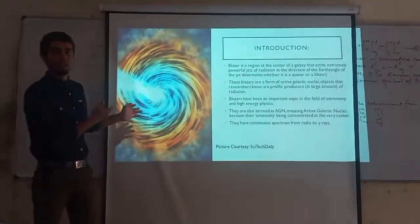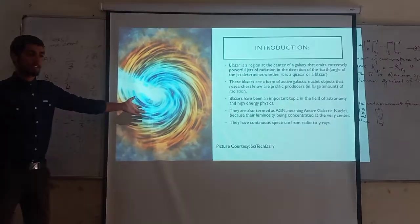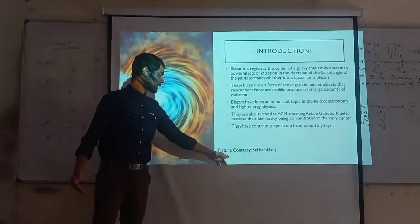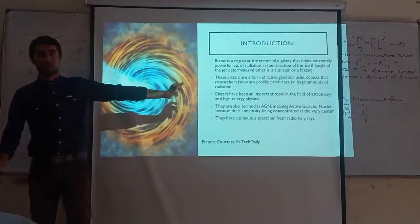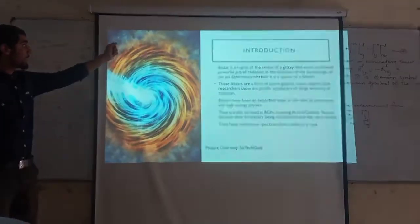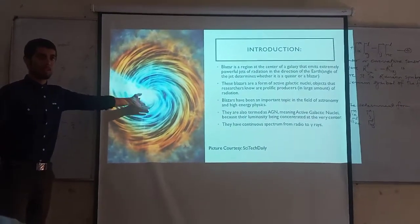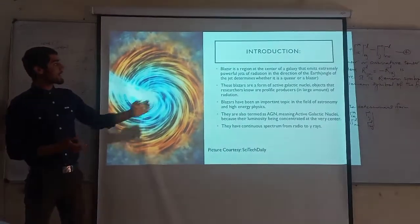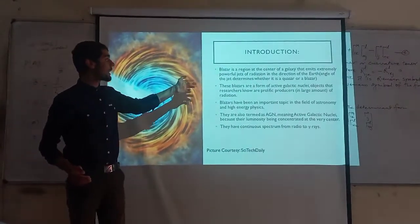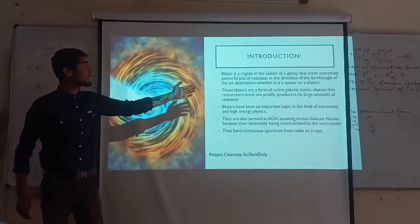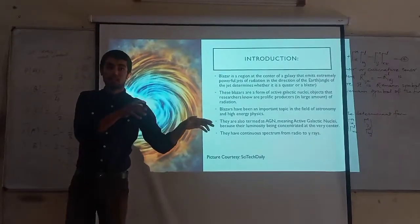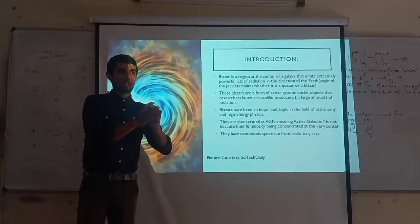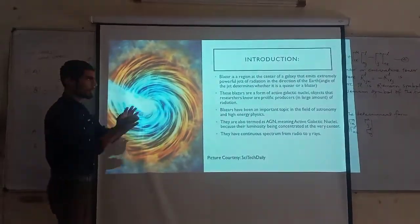Here I have included a picture of a blazar that I found on the internet, sourced from SciTech Daily. As you can see, it is quite beautiful. To introduce this topic: a blazar is an object at the center of a galaxy that emits extremely powerful jets of radiation in the direction of the Earth. The direction of the jet defines whether it is a quasar or a blazar.